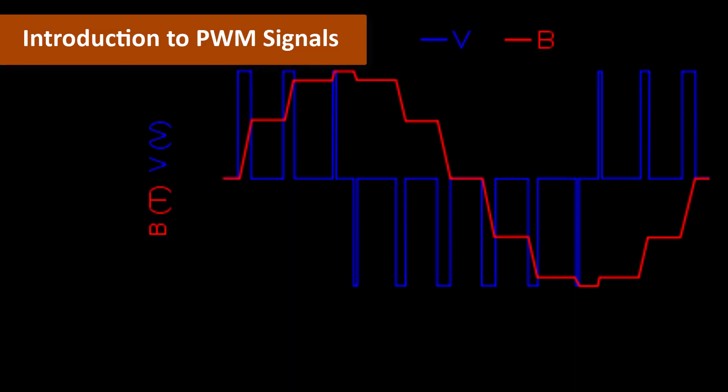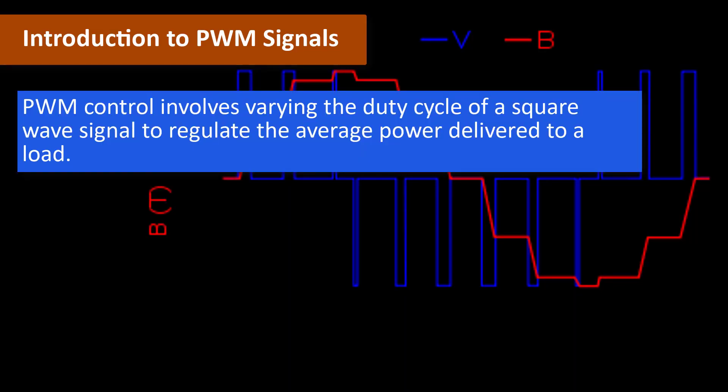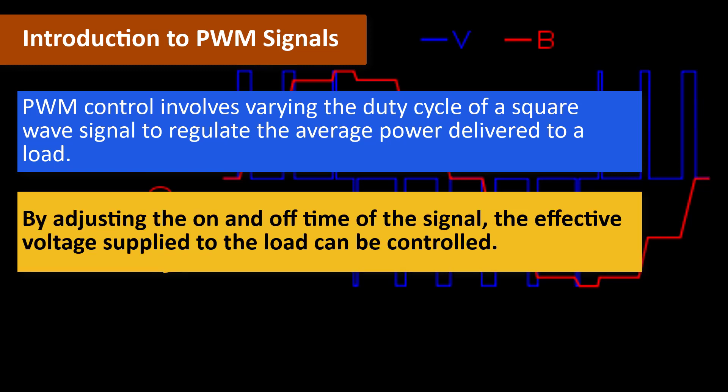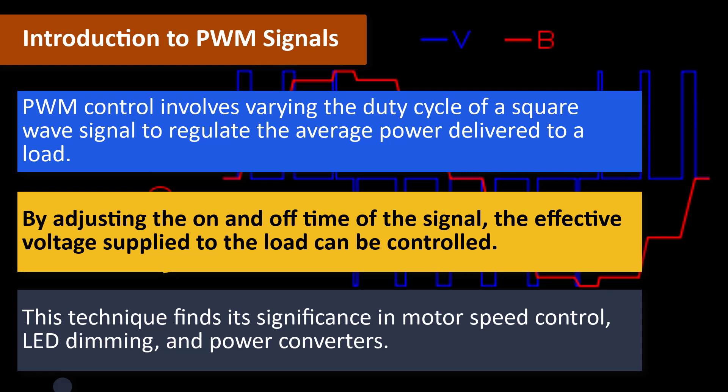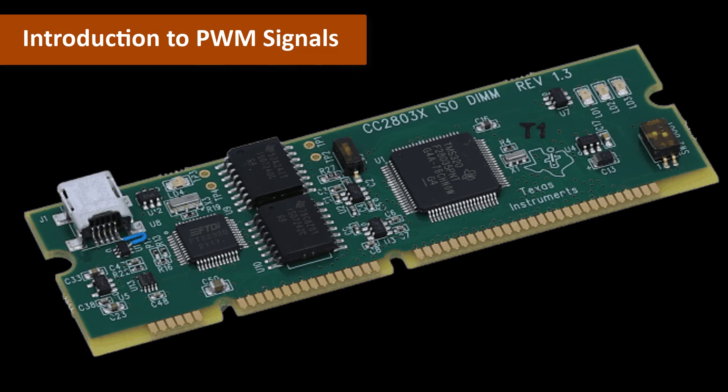Introduction to PWM Signals. PWM control involves varying the duty cycle of a square wave signal to regulate the average power delivered to a load. By adjusting the on and off time of the signal, the effective voltage supplied to the load can be controlled. This technique finds its significance in motor speed control, LED dimming, and power converters.